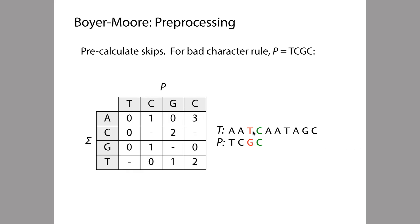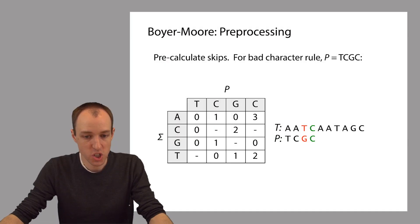We did a match, C matching C, and then a mismatch, G mismatching T. So the G at offset 2 in the pattern, that's what mismatched. And the character that it mismatched in the text was a T.